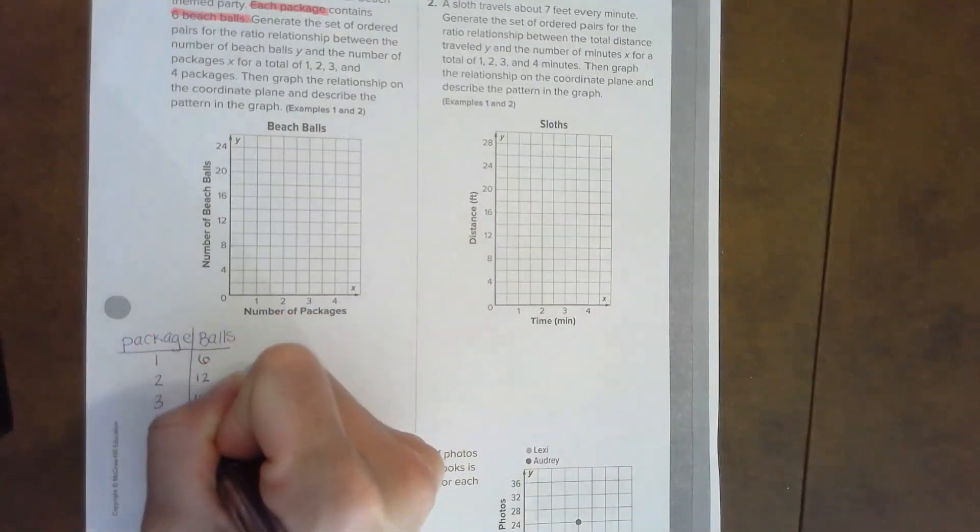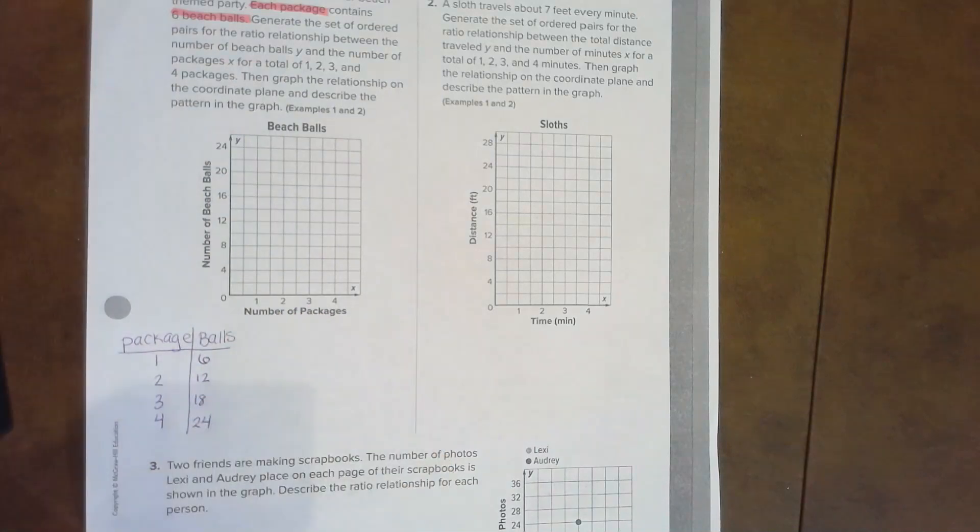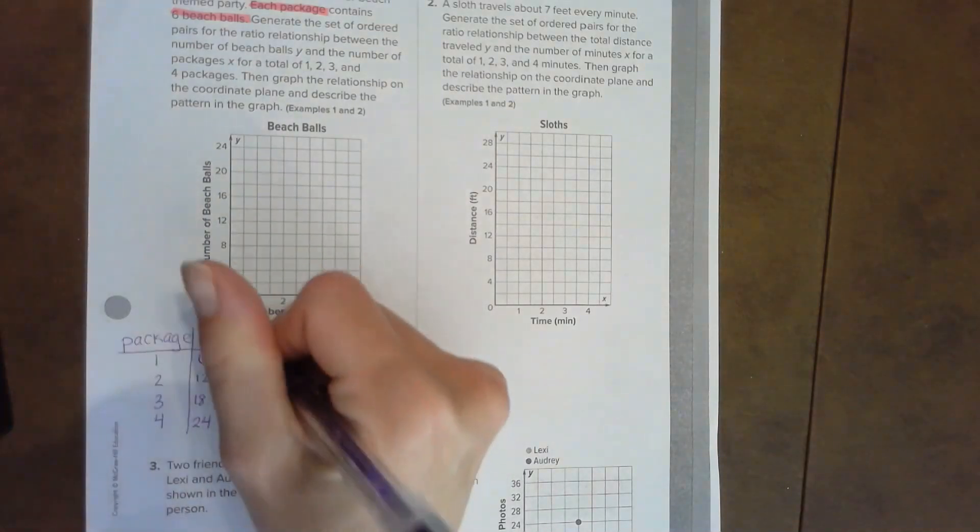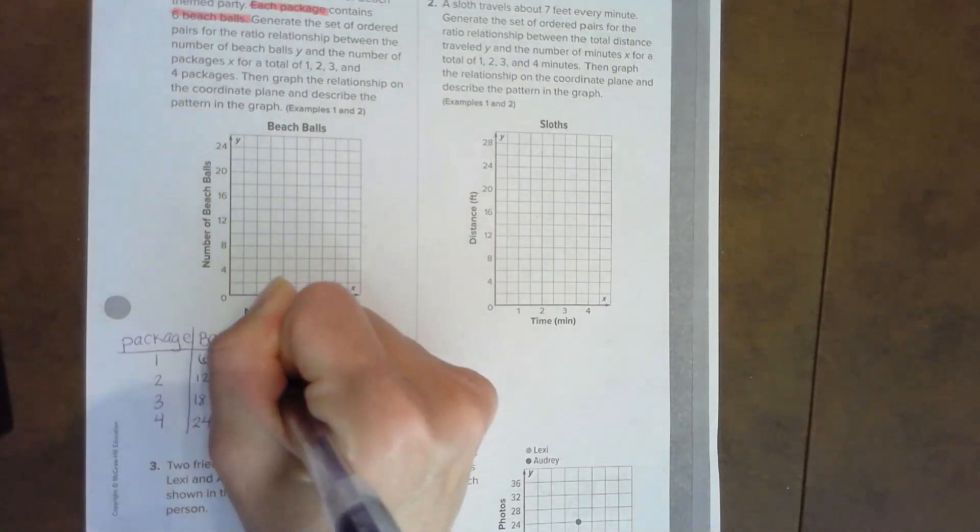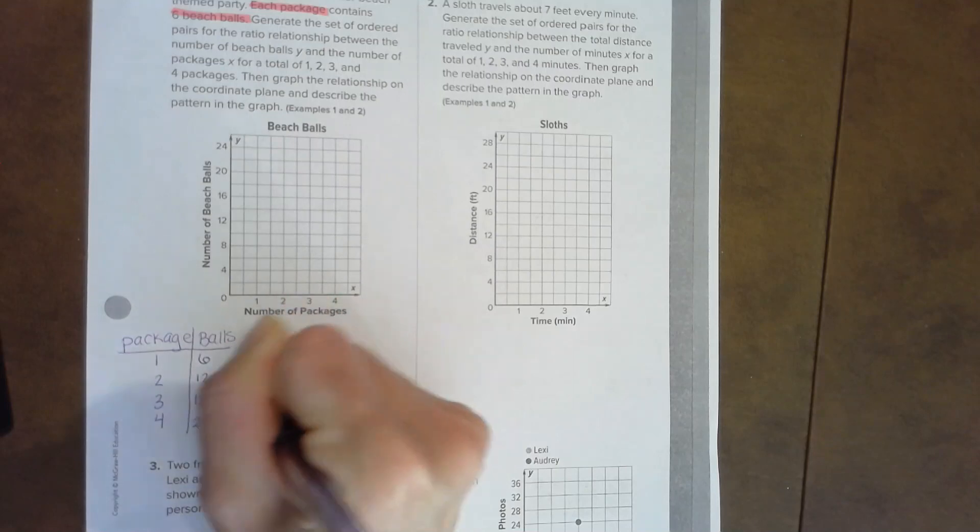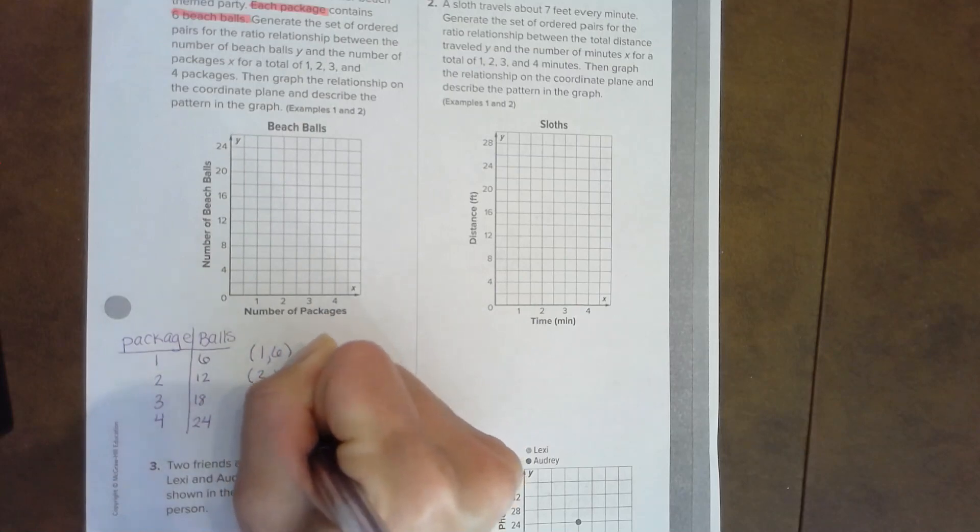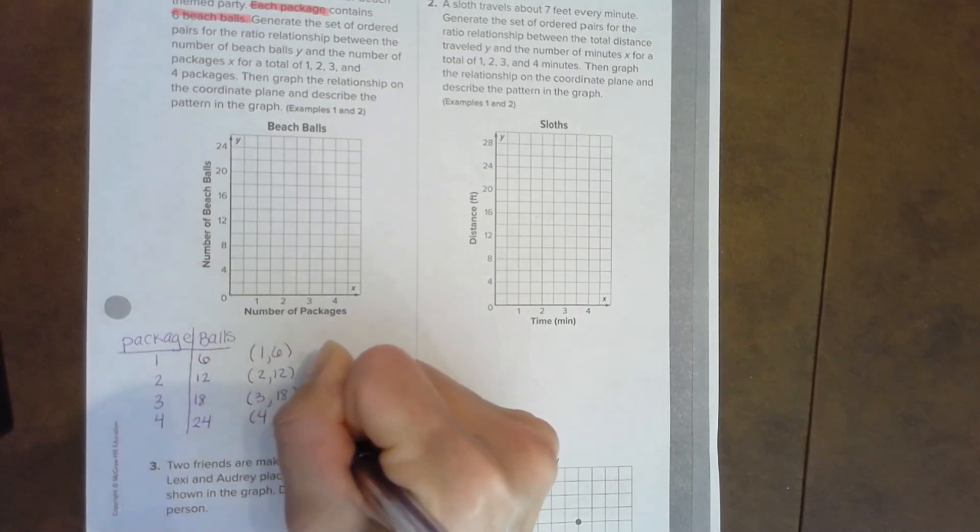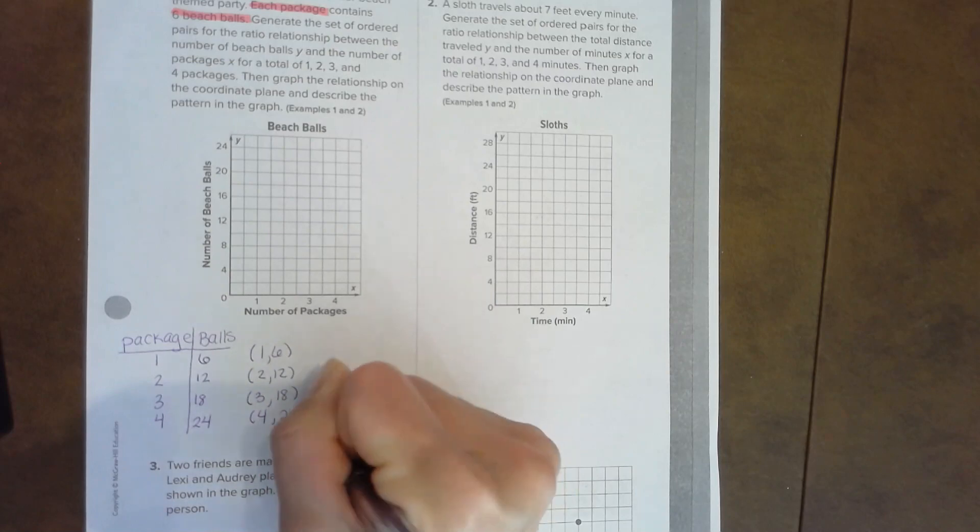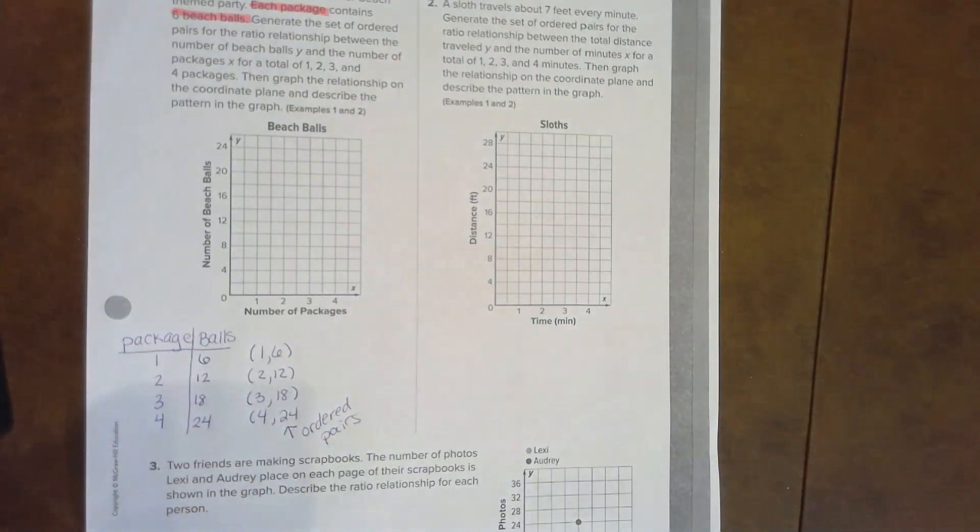Since we need to graph those, let's write our ordered pairs off to the side. It's parentheses one comma six, parentheses two comma twelve, parentheses three comma eighteen, parentheses four comma twenty-four. Let's draw an arrow and label those ordered pairs.